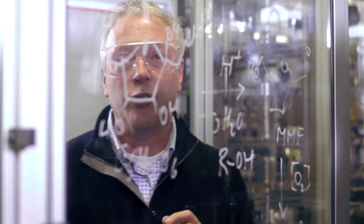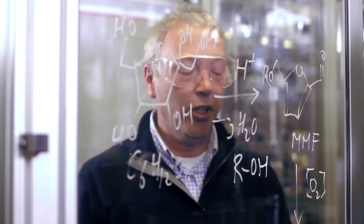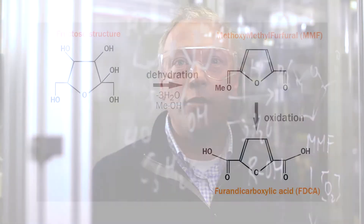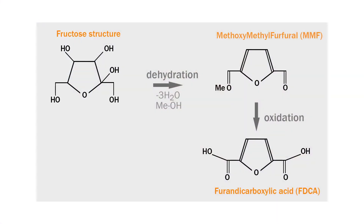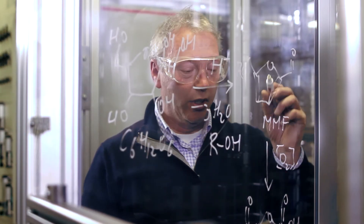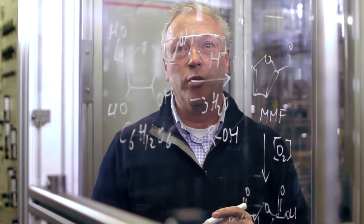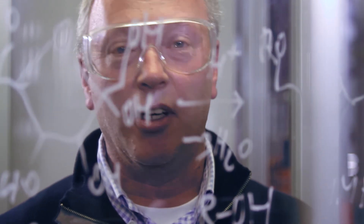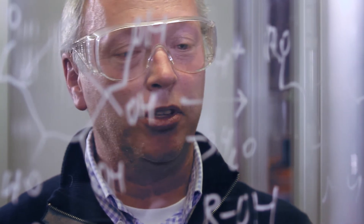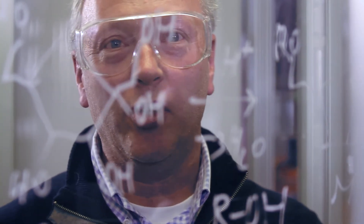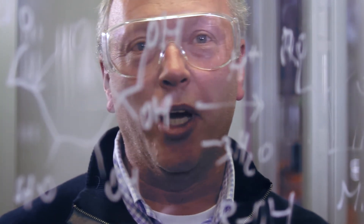FDCA is the analogue of terephthalic acid, which is used for PET. With this FDCA and ethylene glycol we can make our polymer PEF. These two steps are now successful by just changing the solvent from water to an alcohol — not making HMF but making MMF, which is possible to oxidize to FDCA. This is our whole process in two steps. It looks very simple, but this change really made it possible to make this molecule in an economic way.